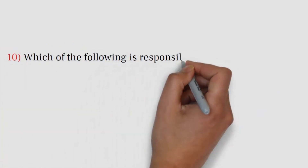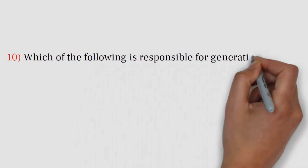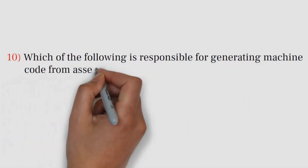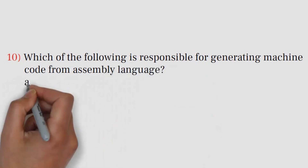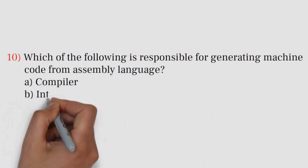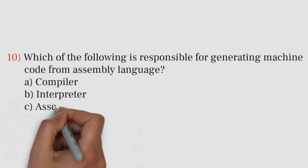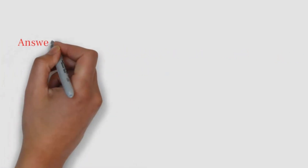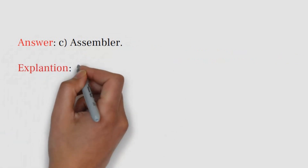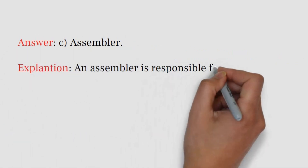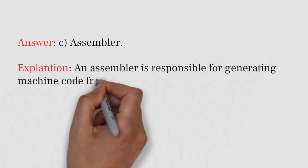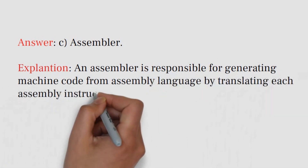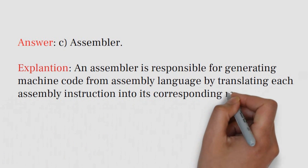Question number 10. Which of the following is responsible for generating machine code from assembly language? Answer: C. Assembler. Explanation: An assembler is responsible for generating machine code from assembly language by translating each assembly instruction into its corresponding machine code. The resulting machine code can be executed directly by the computer's hardware.